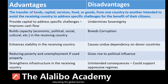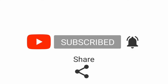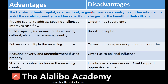By definition, we're talking about the transfer of funds, capital, services, food, or goods — it could be agricultural goods, goods to build refineries, goods to build roads — from one country to another, intended to assist the receiving country to address specific challenges for the benefit of the citizens. The countries giving these funds and services do so with the hope that it will trickle down to the common citizens.